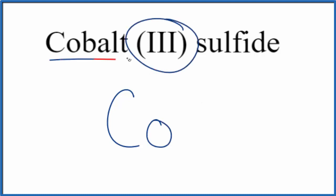In this 3 here, cobalt's a transition metal, so we have a 3-plus for the cobalt. Sulfide, that's just going to be S for the sulfur.